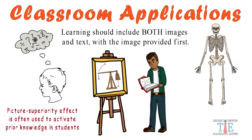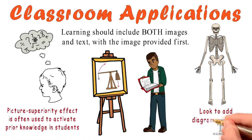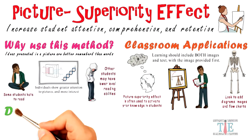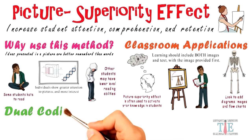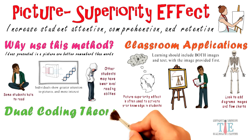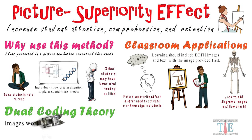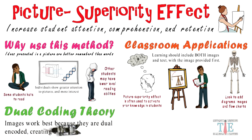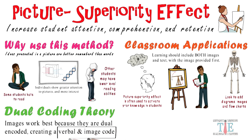It also goes without saying that certain types of lessons just work better through diagrams. Think about how difficult it would be to learn human anatomy without diagrams and images. The reason learning through pictures is more effective than words lies in the dual coding theory. Images work best because they are dual encoded — meaning they create both a verbal and an image code. When you see an image, your mind simultaneously generates associated words as well.